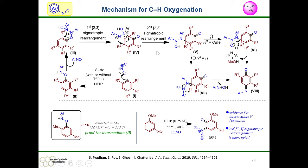To prove the 2,3-sigmatropic shift, we took the meta-methyl anisole derivative and employed it under our standard condition and isolated a nitrone derivative. This nitrone derivative is proof for intermediate 5, and this nitrone intermediate is undergoing the second 2,3-sigmatropic shift. Thus, the 2,3-sigmatropic shift mechanism was proved by the isolation of this nitrone intermediate.